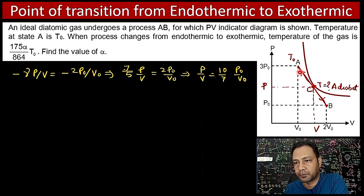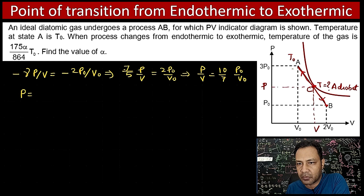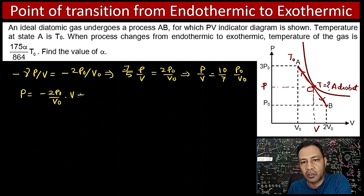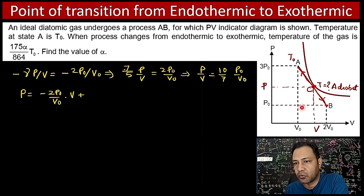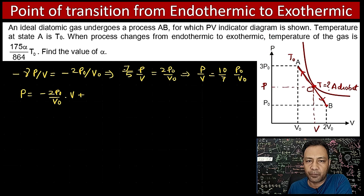Line AB is a straight line with equation p = mv + c. The slope is minus 2p0/v0. As volume decreases from 2v0 to v0, the pressure increases by 2p0; extending the line to v = 0, the y-intercept c = 5p0. So the equation of process AB is: p = minus(2p0/v0) · v + 5p0.